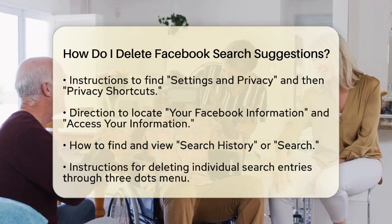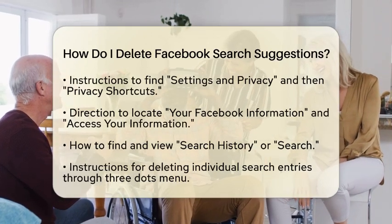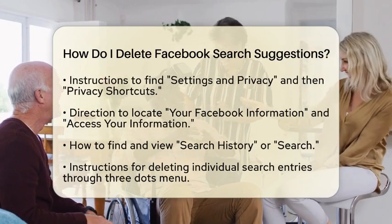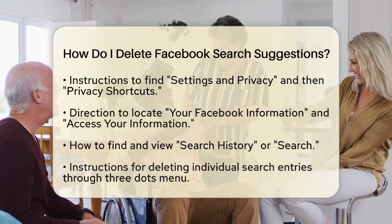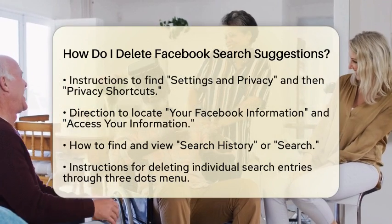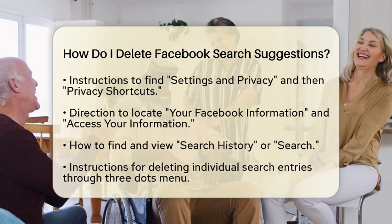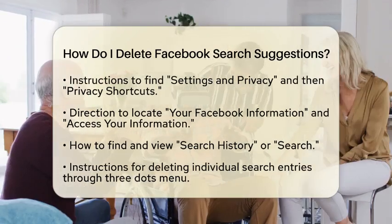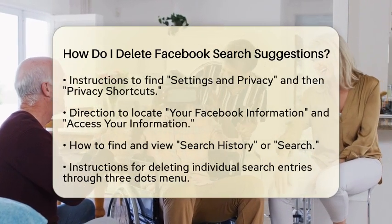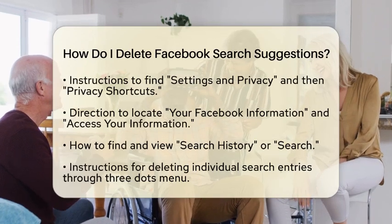If you want to delete individual entries, just tap on the three dots next to each search and select Delete. If you prefer to clear everything at once, look for the Clear Searches or Clear Search History option. Once you do this, your search suggestions will be wiped clean, giving you a fresh start.